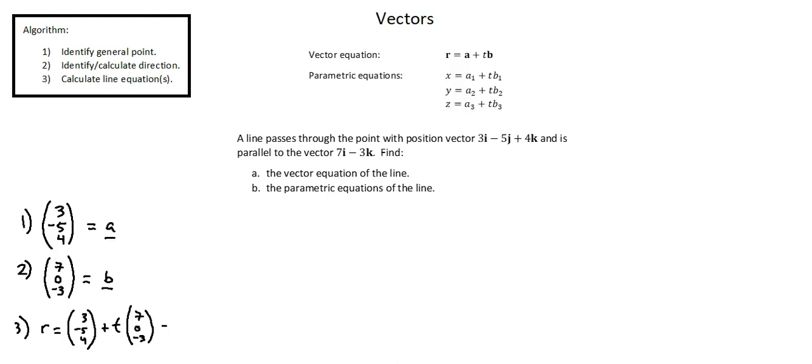We can also write this line equation in unit vector form as 3 plus 7t, i, minus 5j, plus 4 minus 3t, k.